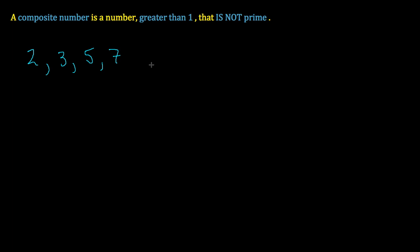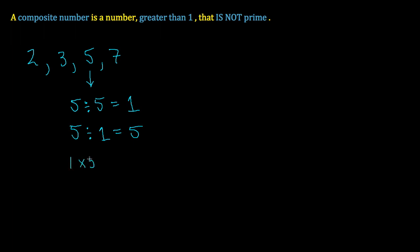A prime number has exactly two different factors: one and itself. What I mean by two different factors is that it is evenly divisible by two numbers only. For example, 5 can be divided by 5 and we get 1 with no remainder, or 5 can be divided by 1 and we get 5 with no remainder. Simply stated, 1 times 5 equals 5, and there's no other pair of natural numbers we can multiply together to give us 5. So it is prime.